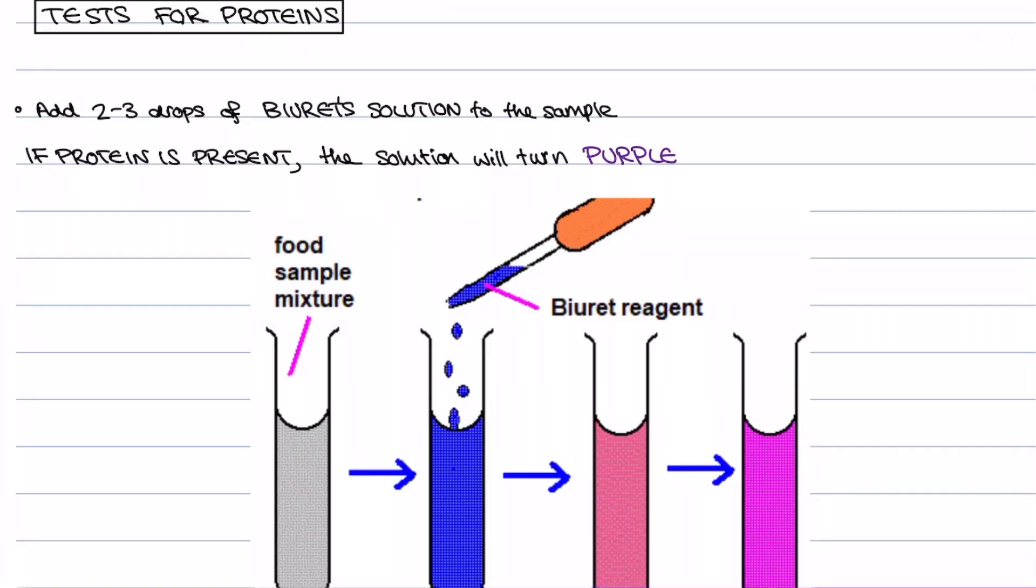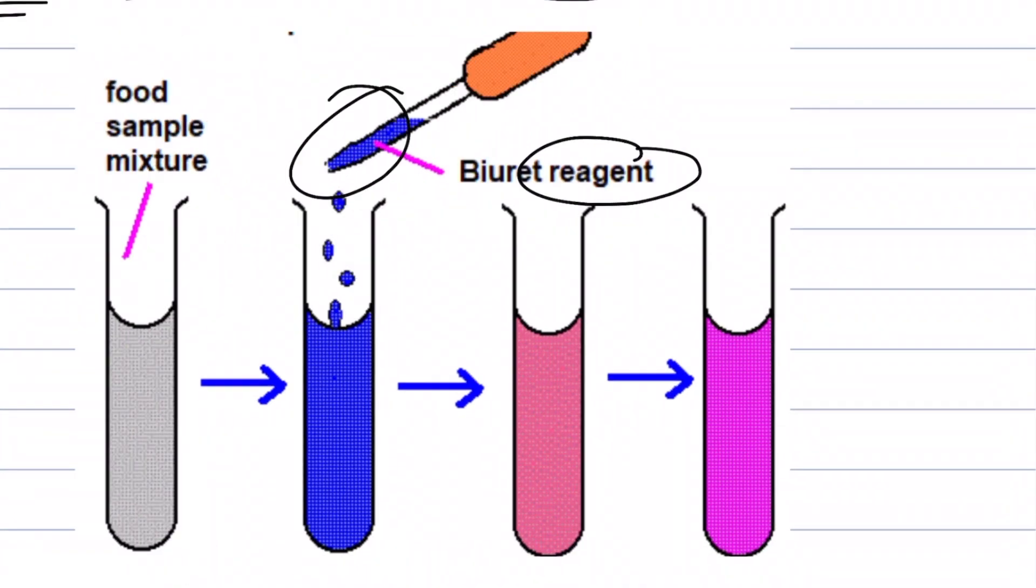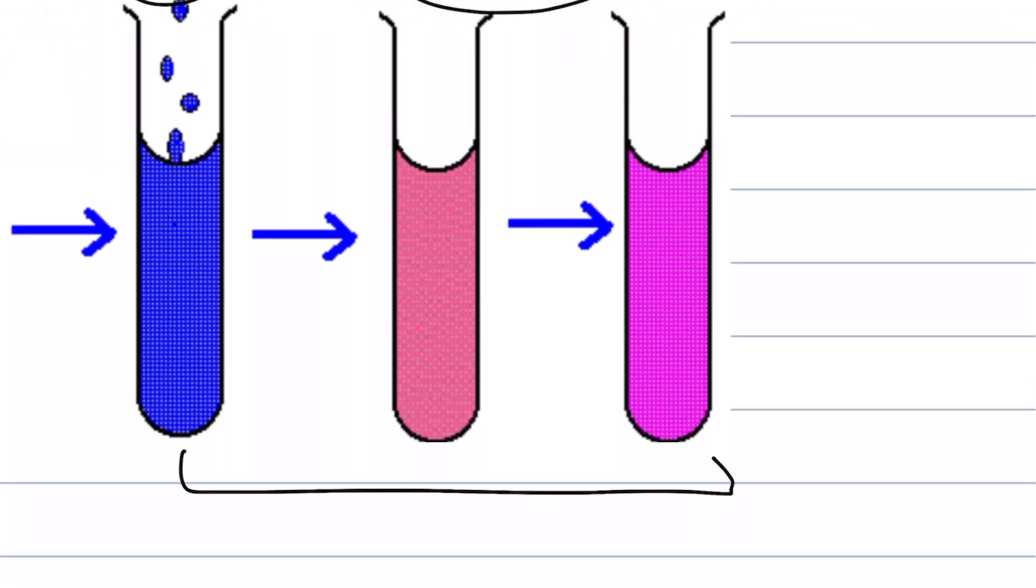The next food test is the test for proteins. The chemical that we have to add is called the Biuret solution. Biuret solution has a blue color by itself and the positive test if protein is present is our solution will then turn purple. We do tend to see quite a dramatic color change but again it can go anywhere from pink up to purple.